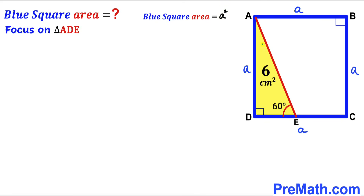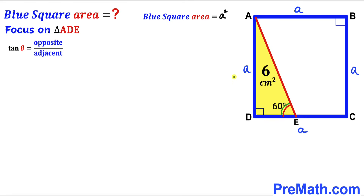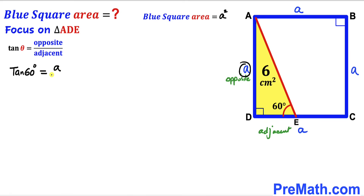Now we focus on the yellow shaded triangle ADE and recall the trigonometric ratio: tangent of theta is always equal to the opposite side divided by the adjacent side. For the angle of 60 degrees, the opposite side is the side of length a, and DE is the adjacent side. So tangent of 60 degrees equals a divided by DE.